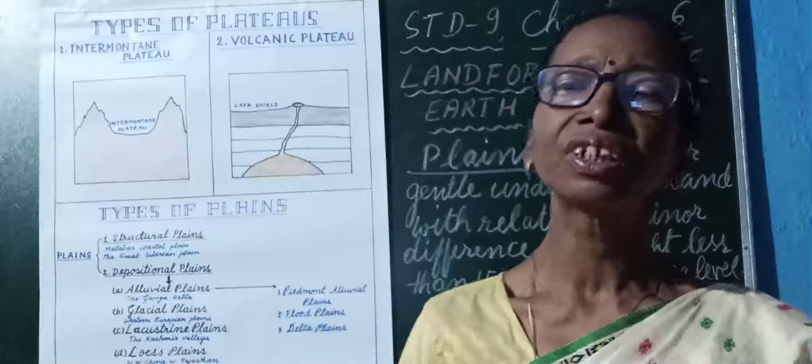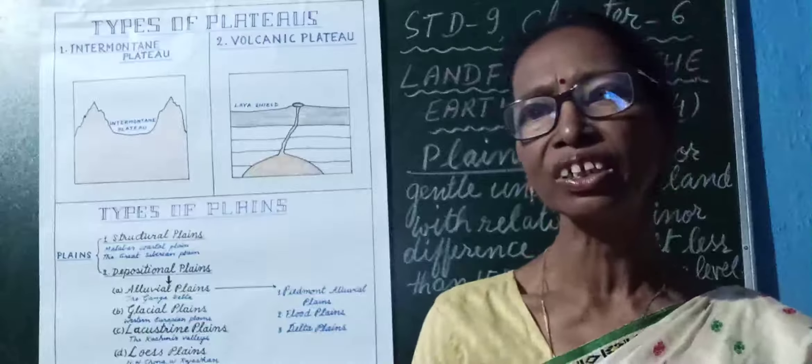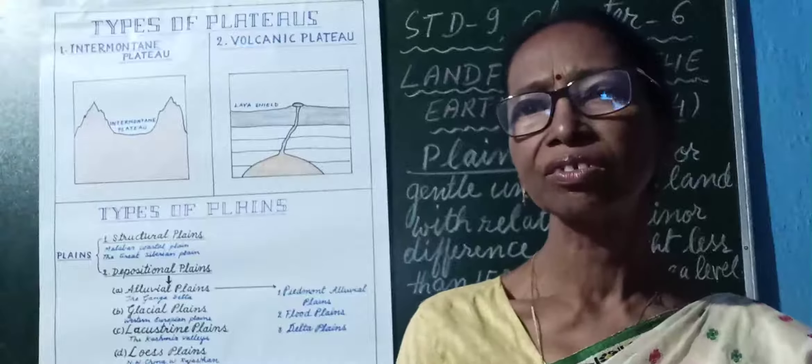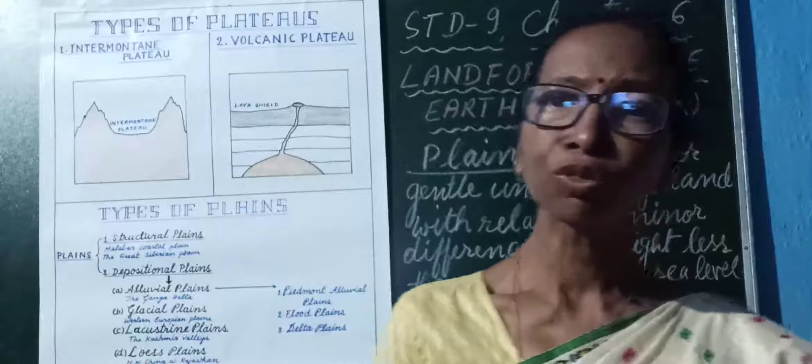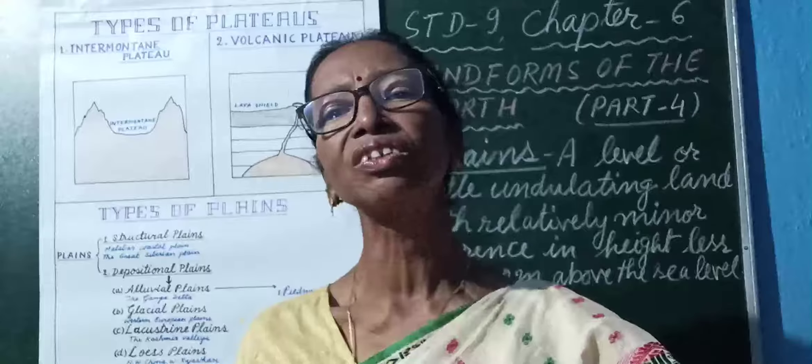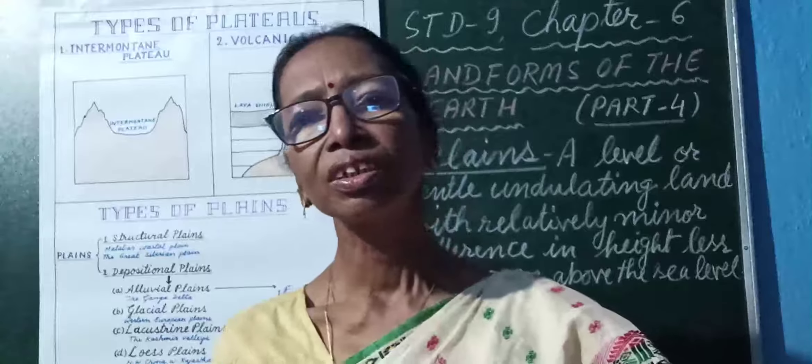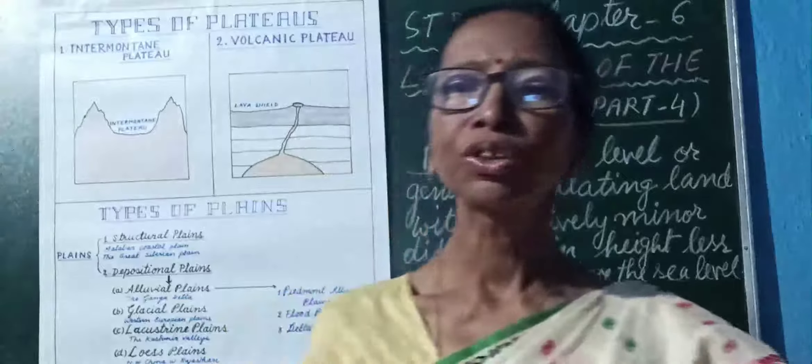Hello students of Standard 9. In geography, you are learning about the landforms of the earth. Today you are going to learn Chapter 6, Landforms of the Earth, Part 4. In Part 4, you are going to learn about the types of plains.